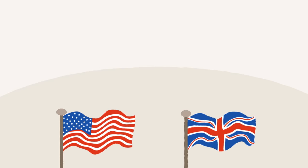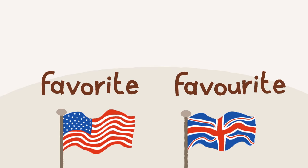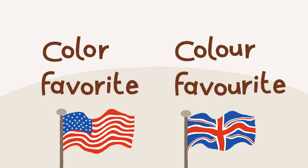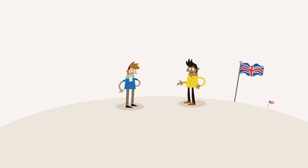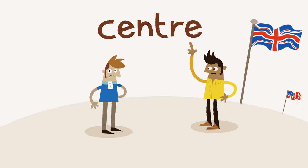It isn't just pronunciation that's different, it's also spelling. British English sometimes uses extra letters. For example: British 'favourite', US 'favorite'. British 'colour', US 'color'. Sometimes the British use different letter order too — British 'centre', US 'center'.